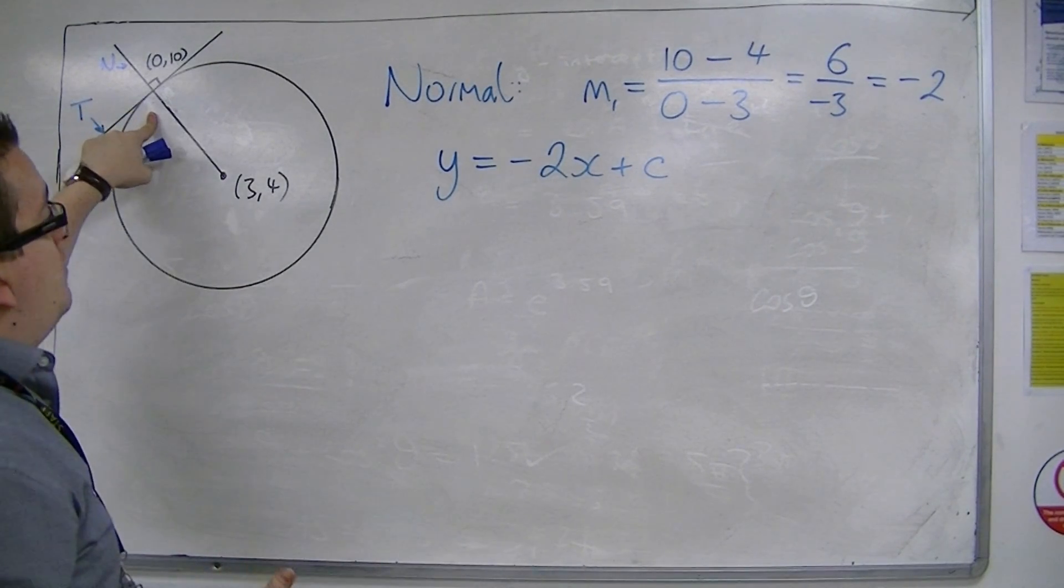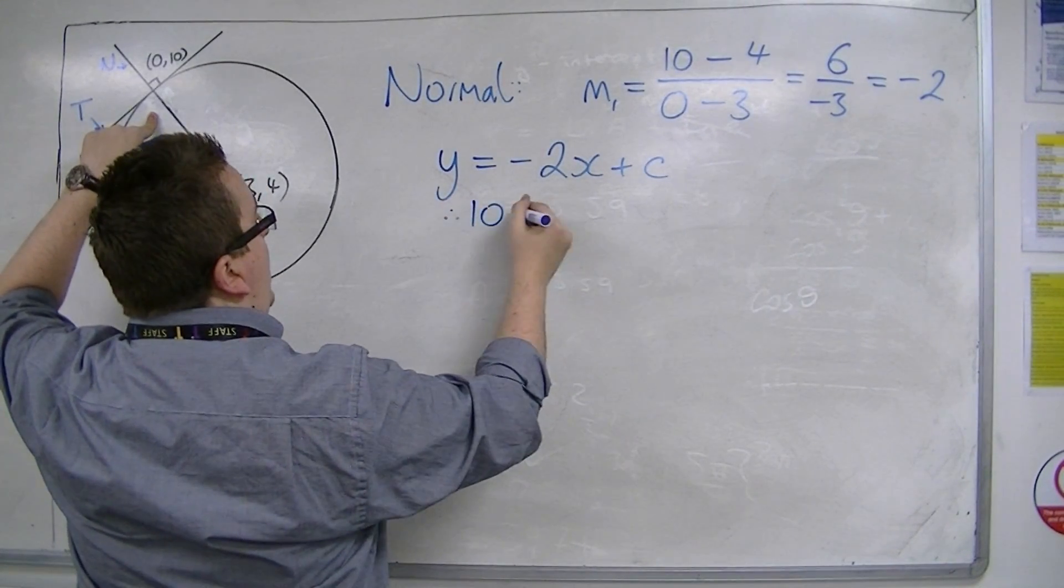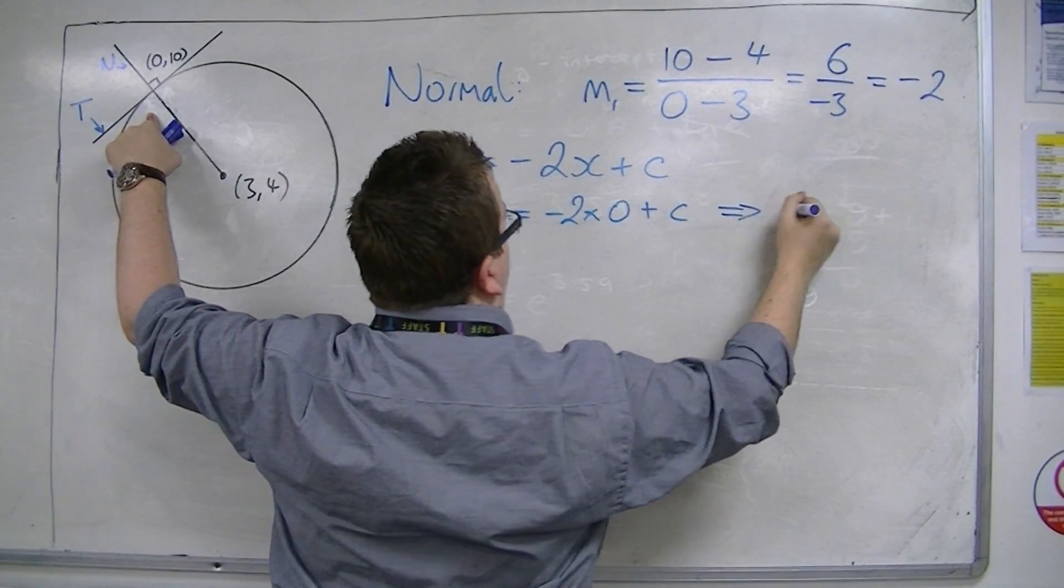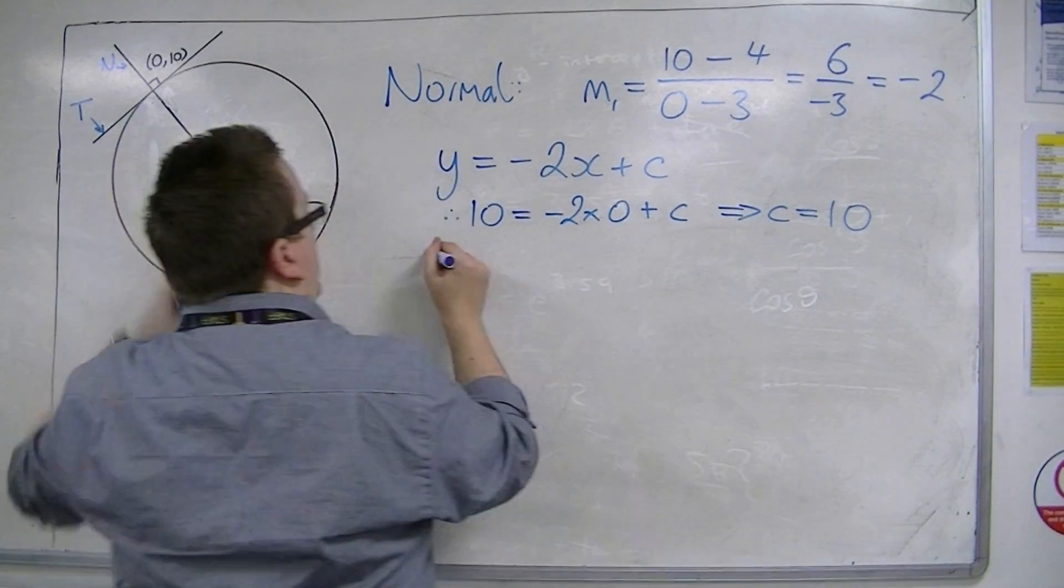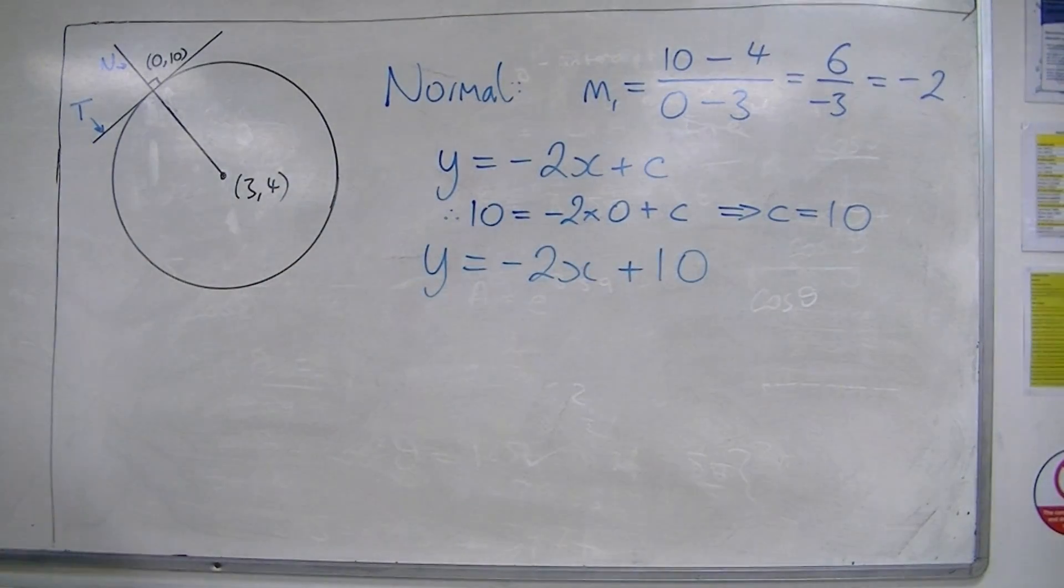I'm going to substitute in the point (0, 10). So, when y is 10, x is 0. So, c is obviously 10. So, the equation of the normal is minus 2x plus 10. y equals minus 2x plus 10.